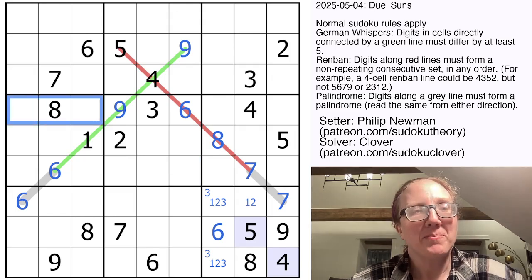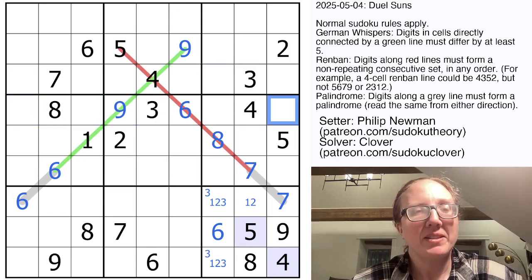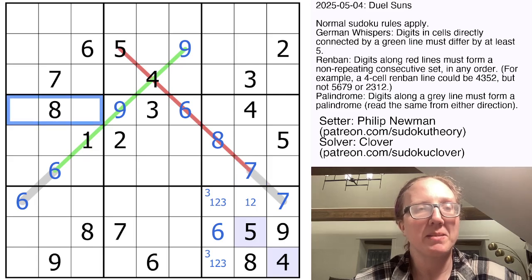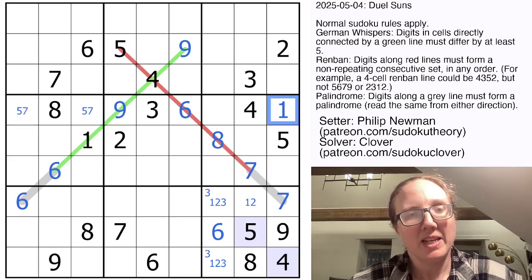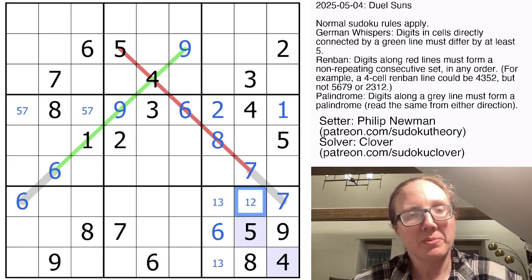So in row four, we still need a five and a seven and a one and a two. The five and seven can't be in these cells because they appear in this region already. So this is going to be a five, seven pair. And our one and two are going to go here and here. That two is ruled out of these cells, placing a two right there.